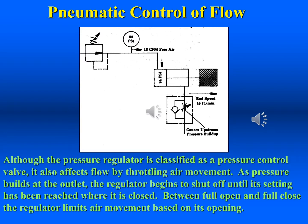Flow controls do the same job in pneumatic systems as they do in hydraulic systems. However, a pressure regulator is a pneumatic pressure control usually found in branch circuits leading up to equipment, and they also affect flow rate. The regulator is normally passing, and as it closes, causes a slowing of the airflow and a drop in pressure known as pressure droop. Therefore, it is necessary to consider the adjustment of both the flow control and the regulator to achieve optimum speed control in compressed air systems.